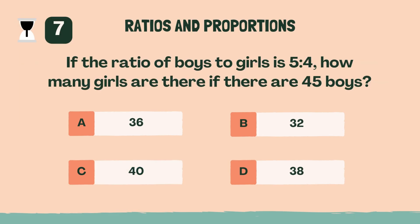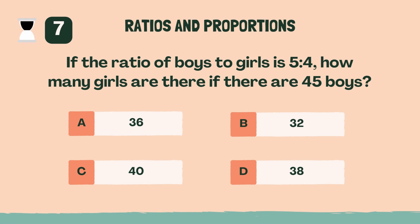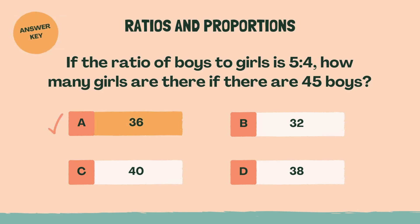If the ratio of boys to girls is 5 to 4, how many girls are there if there are 45 boys? A, 36.